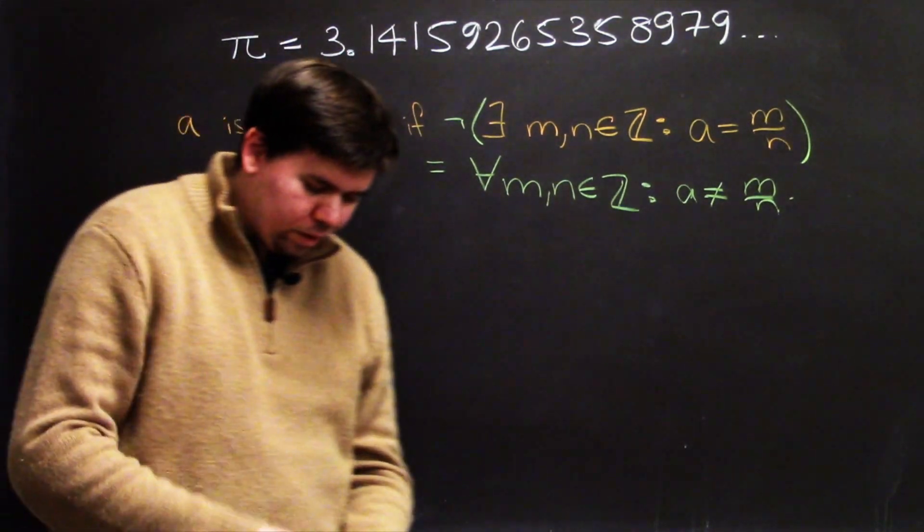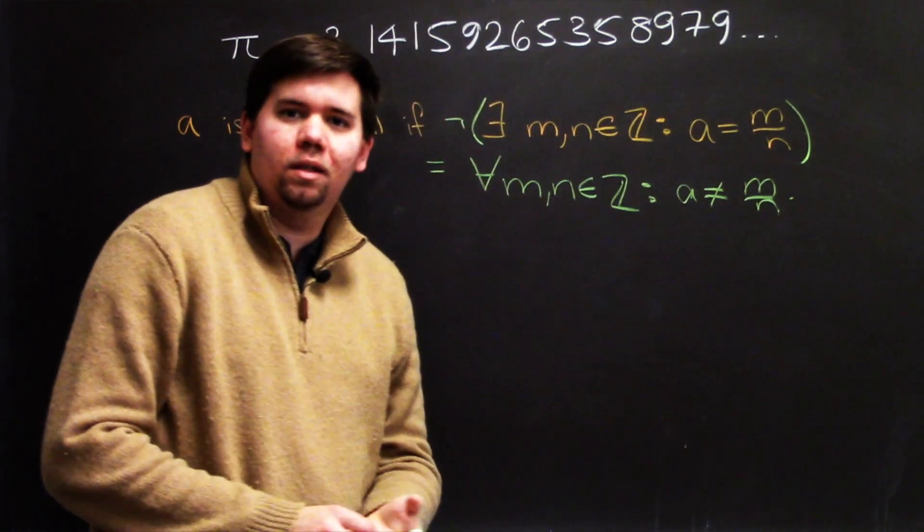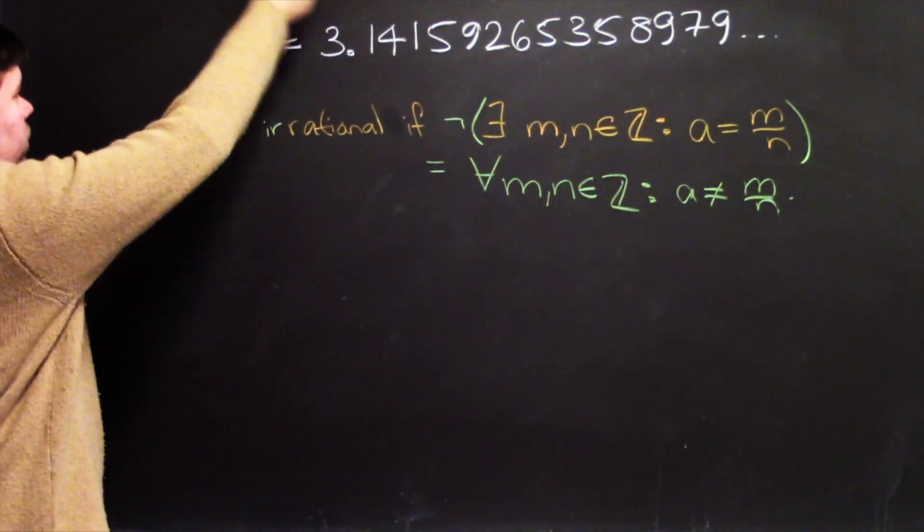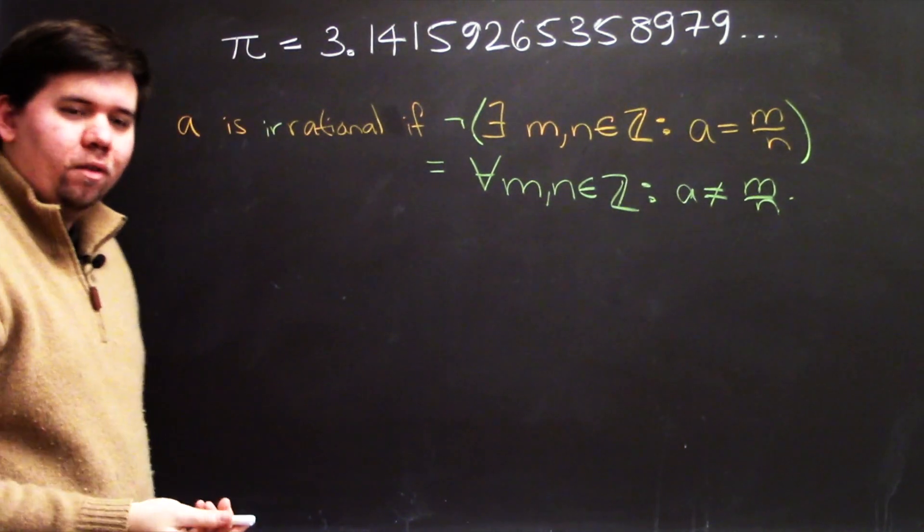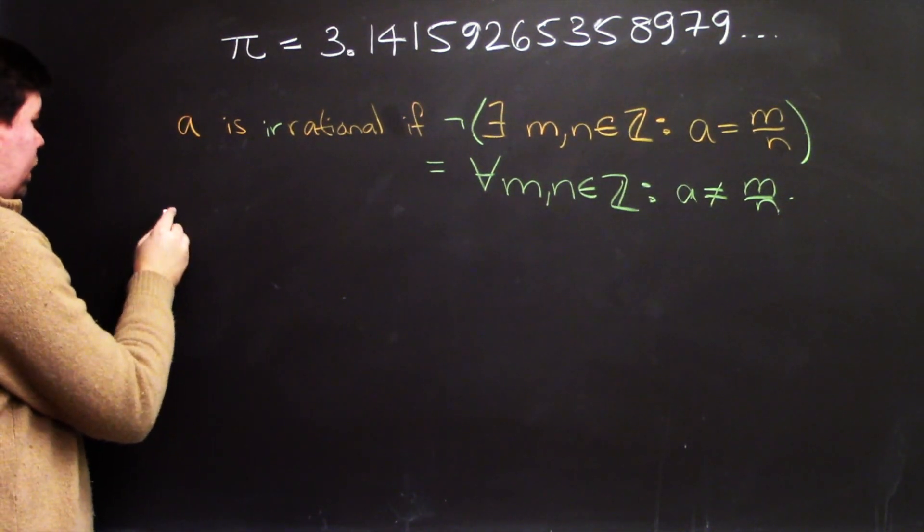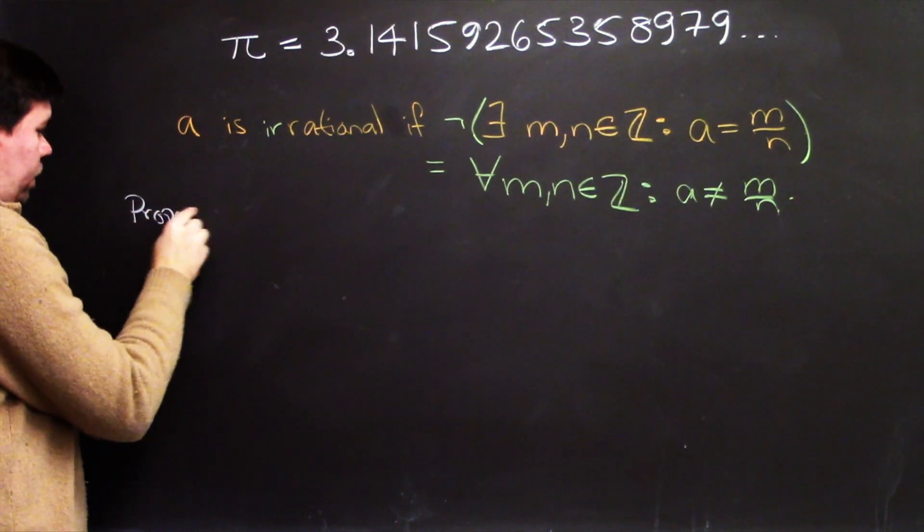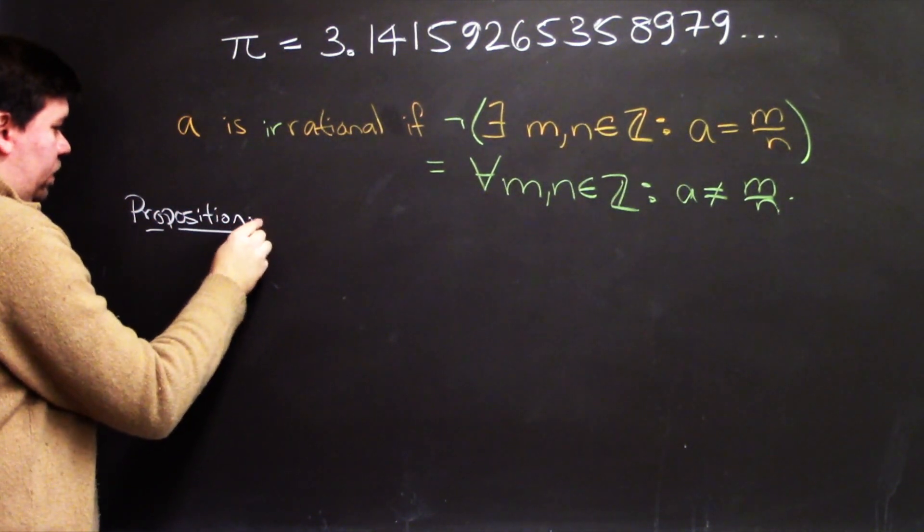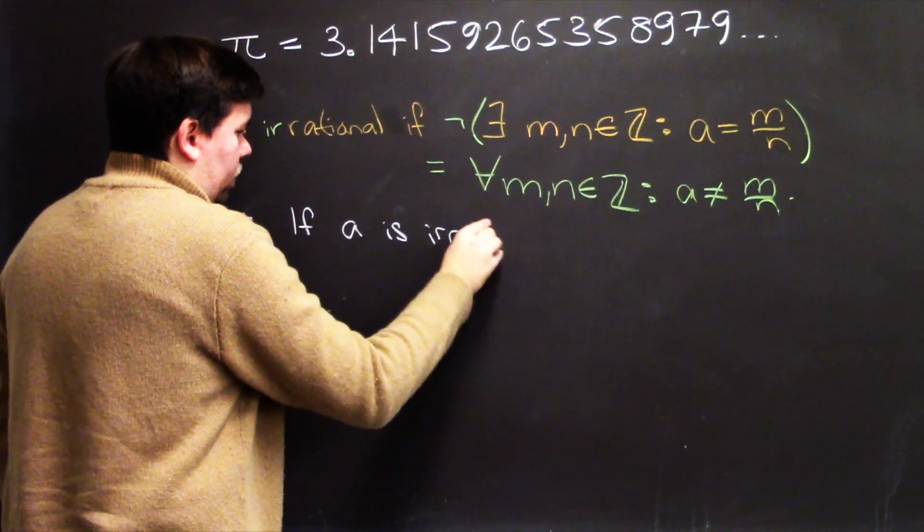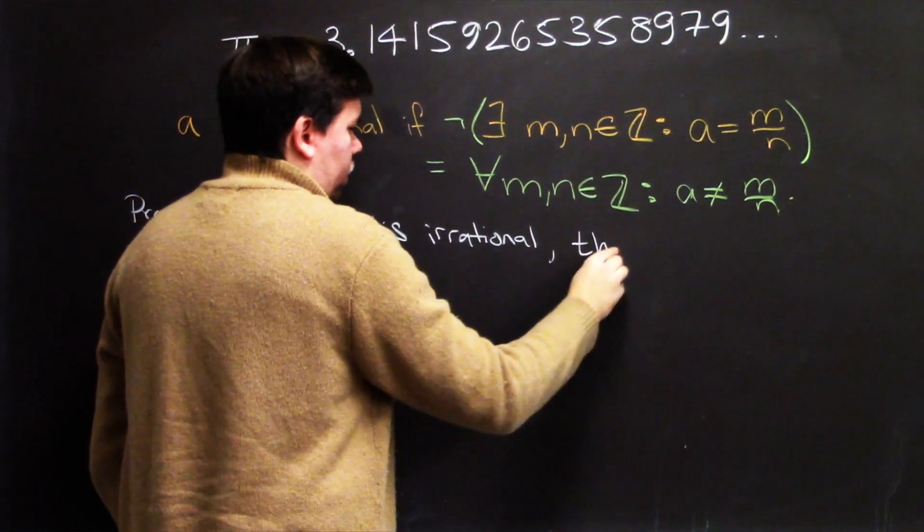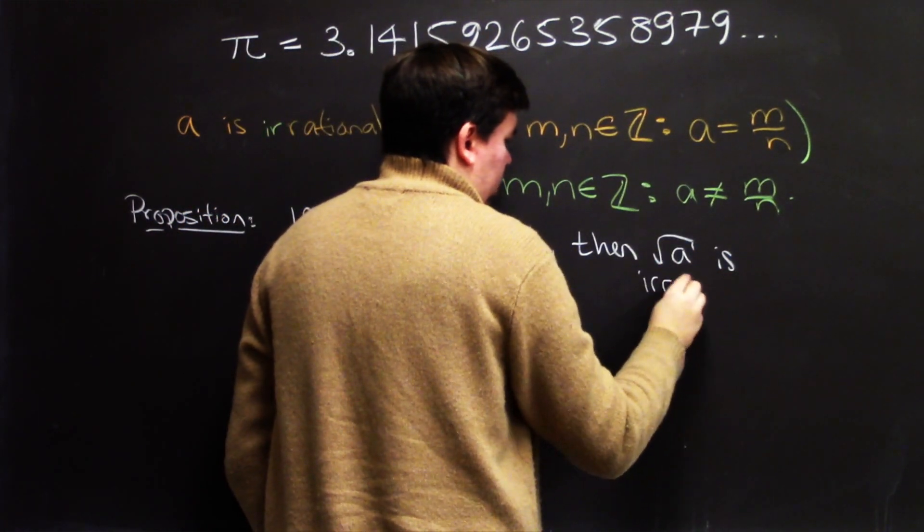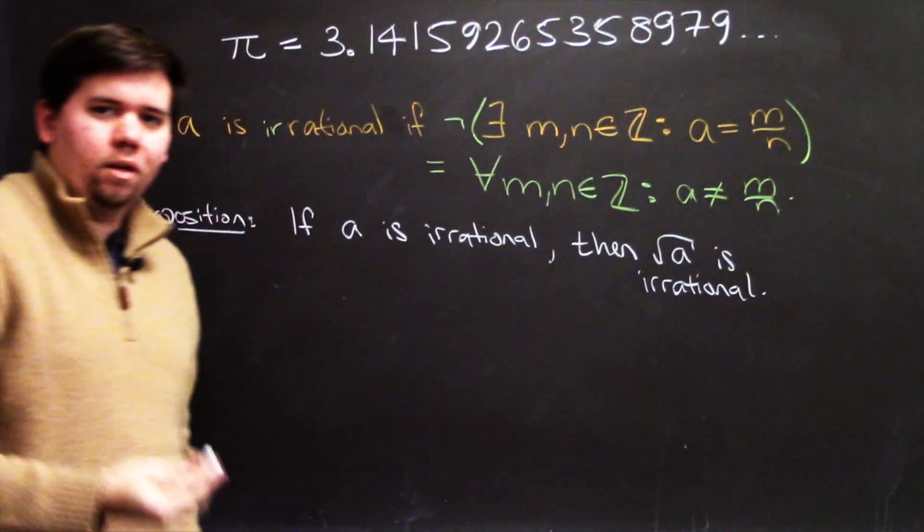So let's think about the square root of pi now. How might you show that the square root of pi is irrational? So one thing you might try to do is you might think, well, somehow the square root of pi being irrational is related to the fact that pi is irrational. So how might we relate these? Maybe you have a proposition that looks something like this.